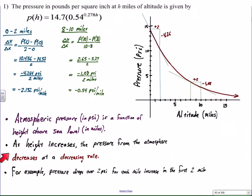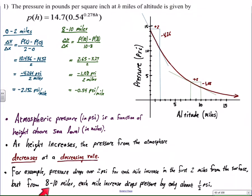Now, to make sure that I know the author knows what I mean when I say decreases at a decreasing rate, I say, for example, the pressure drops over two psi for each mile increase in the first two miles, but only about a half or a pound per square inch in each mile from eight to 10. So three parts to your answers: tell me the variable relationship, tell me what happens to the function and how, and then use your data that you calculated, the rates that you calculated to help support that answer.